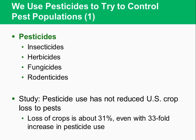A pesticide is any chemical used to kill or control populations of organisms that humans consider undesirable. Common types include insecticides, which kill insects; herbicides, which are weed killers; fungicides, which kill fungus; and rodenticides, which kill rats. Pesticide is the umbrella term for all four. Studies have shown that pesticide use has not reduced U.S. crop losses to pests — losses remain about 31% even with a 33-fold increase in pesticide use. Some pesticides are broad-spectrum, killing many types of pests, while others are selective, targeting a narrow range of organisms.